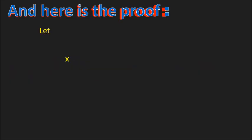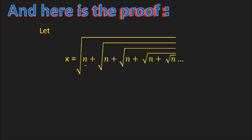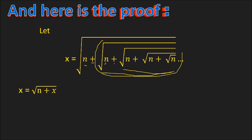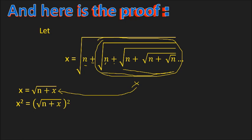And now, here is the proof of the previous formula. If we let x equal the square root of n plus the square root of n plus the square root of n, repeated infinitely, then we have x equals the square root of n plus x, because this inner expression is also x. Squaring both sides to eliminate the radical sign, we have x squared equals the quantity (square root of n plus x) squared. Since square root and squaring are opposites, they cancel, giving x squared equals n plus x. Forming the standard quadratic equation: x squared minus x minus n equals zero.